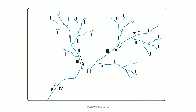Let's talk about this with a diagram. As we can see here, this stream has no tributary, so it is first order. Similarly, other streams with no tributaries are also first order. This first order and another first order stream are meeting at a point, so the resultant stream must be second order.